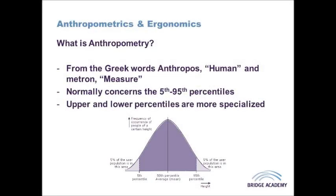Closely linked to ergonomics is the study of anthropometrics in the design of the product. The word anthropometrics comes from the Greek words 'anthropos' meaning human and 'metron' meaning measure — so, human measurements. In addition to measurements such as height, hand size, breadth and shoe size, we might also consider strength factors and reach. If we are designing a product someone has to use, we consider their size and their capabilities to ensure the product is safe, easy to use and comfortable.